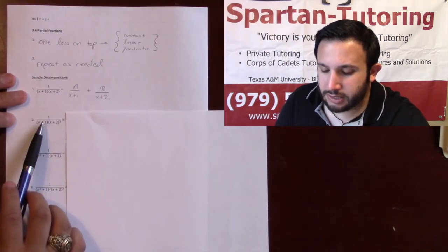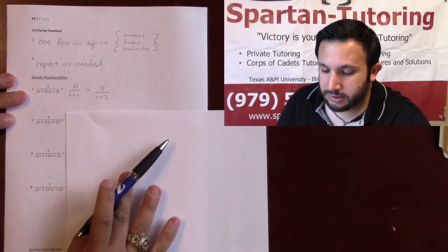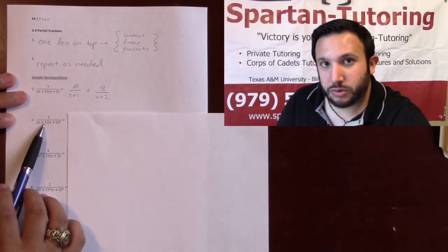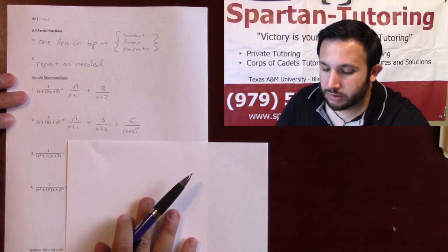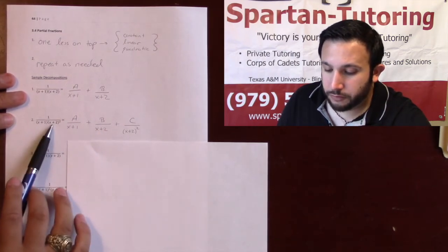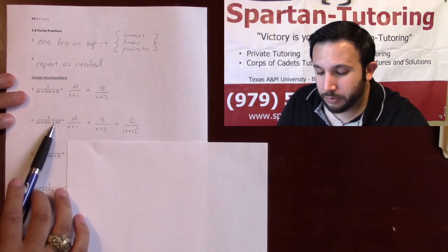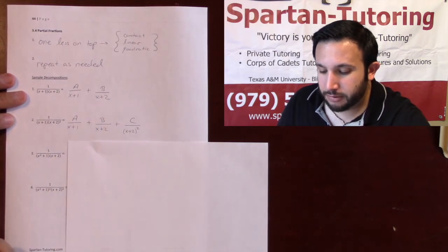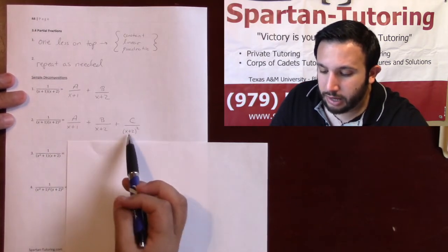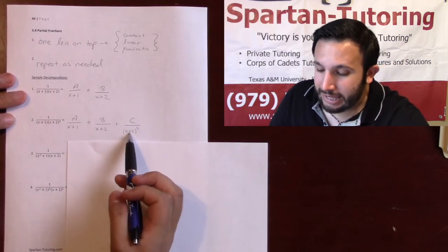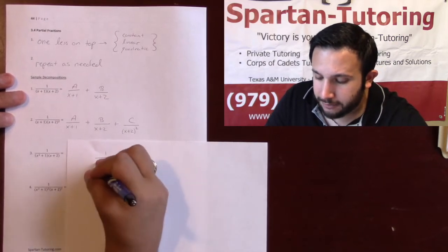For number two, I have 1 over (x+1)(x+2)². Inside the first parentheses, x+1 is linear, so I put an arbitrary constant A on top. For x+2, it's also linear so I put constant B on top — but notice it's repeated, there are two of them, so I need to repeat it again. All I care about is the inside of the parentheses, which is linear, so I put constant C over that.